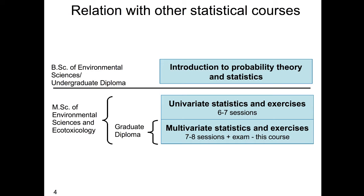A quick overview on the relation to other statistical courses: in the bachelor of science course there is an introduction to probability theory and statistics. At master of science level we have the univariate statistics course — which you have just passed — and the multivariate statistics course that you are now attending.